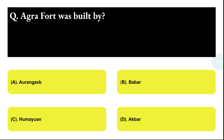Next question: Agra Fort was built by whom? Option A: Aurangzeb, Option B: Babur, Option C: Humayun, Option D: Akbar. The correct answer is option D, that is Akbar.